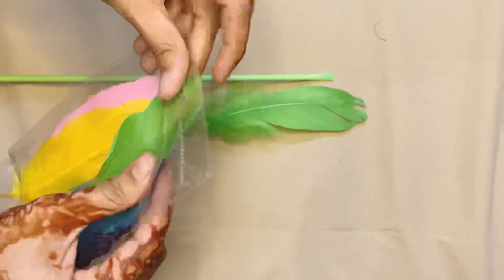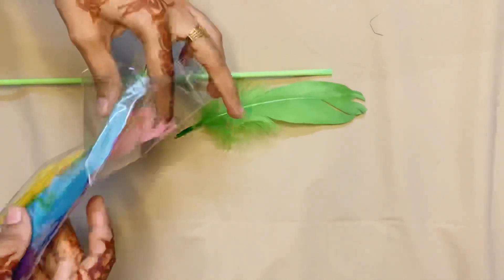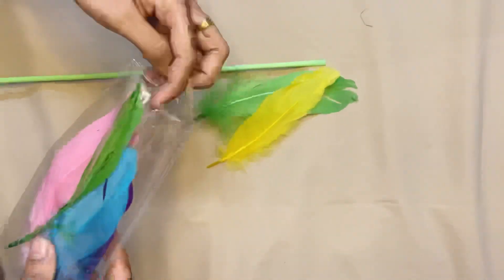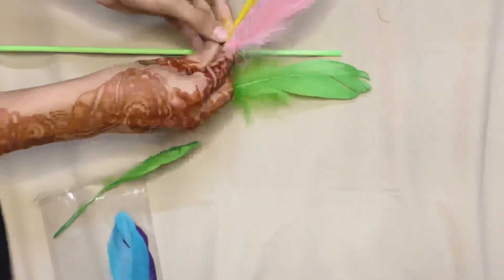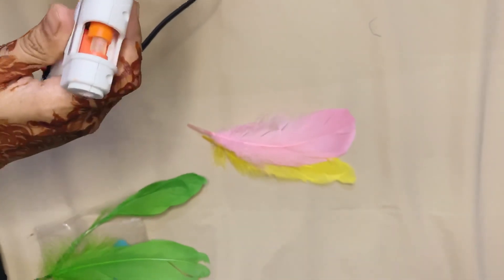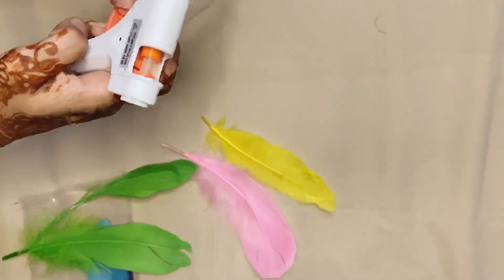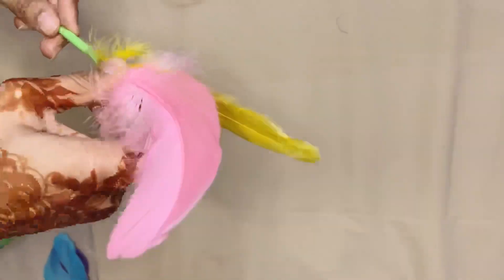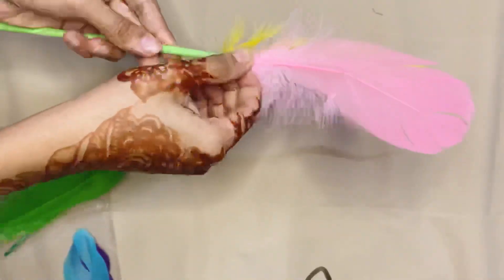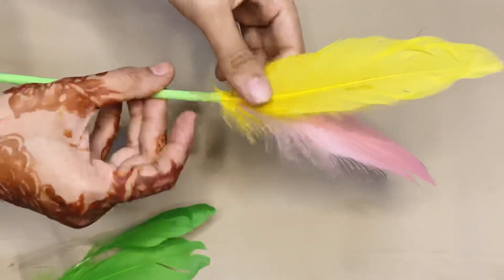Now we will take the feathers and add them. We will add a little glue and now we will stick the feathers. Stick the feathers in a good way and I have put in a lot of glue so that it will stick well.